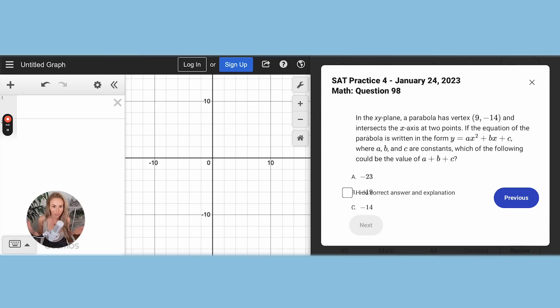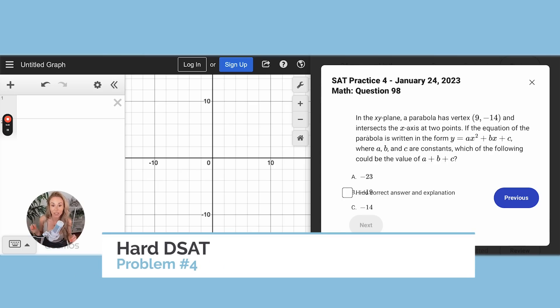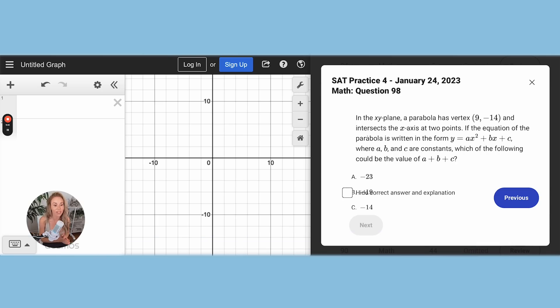Okay. So this last one is super tricky and involves a little logical reasoning, but you can still use Desmos to help you get the answer. So it says in the XY plane, a parabola has vertex (9, -14) and intersects the X axis at two points. Okay.